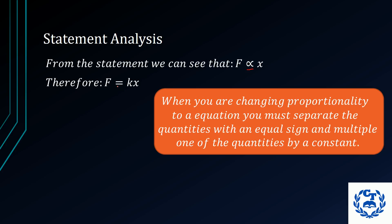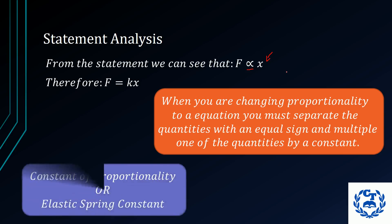Replace it with an equal sign, and then we multiply one of the quantities, in this case we take X by a constant, and this constant is called simply the constant of proportionality. In this case, for Hooke's Law, we will call it the elastic spring constant.